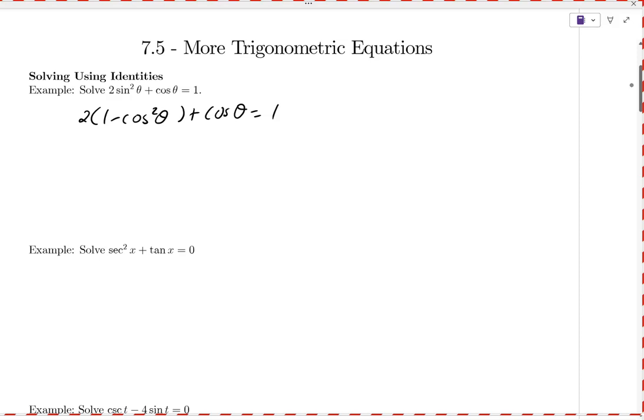And now this looks a heck of a lot like the equations we were doing last time, doesn't it? Right? We try to factor it if we can. So distribute the 2 through here. So we get 2 - 2cos²θ + cosθ = 1. Just so that I can get a positive coefficient on my cosine squared, I'm going to move everything to the right rather than move everything to the left. So when we do that, we should get 2cos²θ - cosθ - 1 = 0. And now, like I said, this now looks a lot like what we did last time, right? How does this factor?